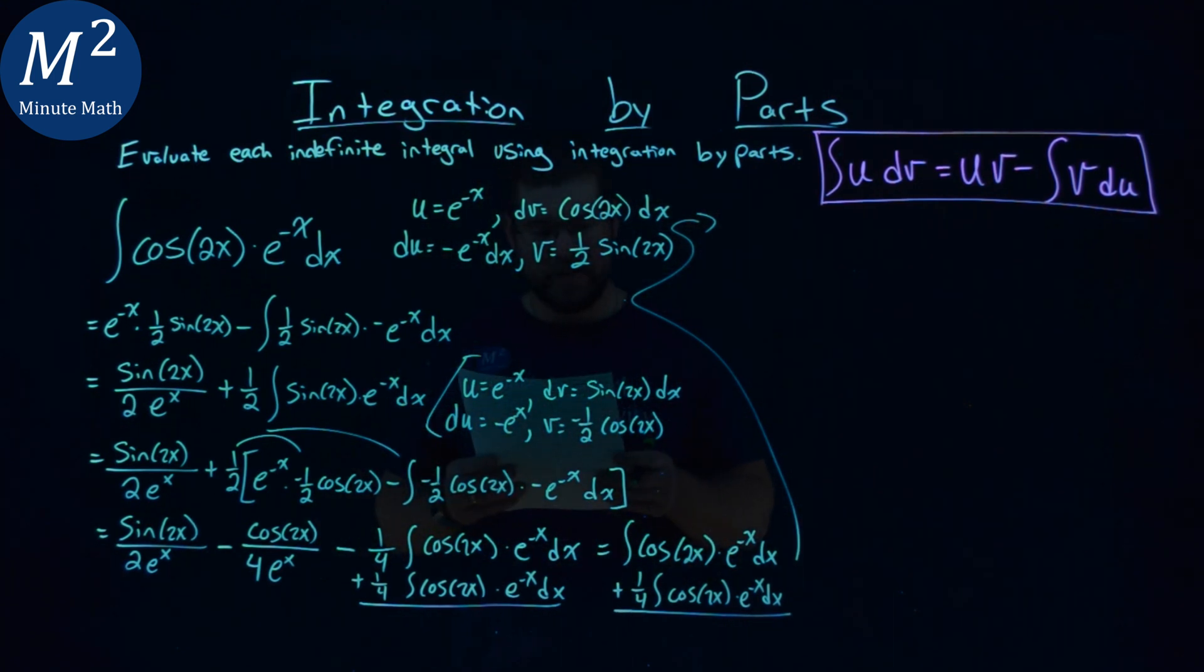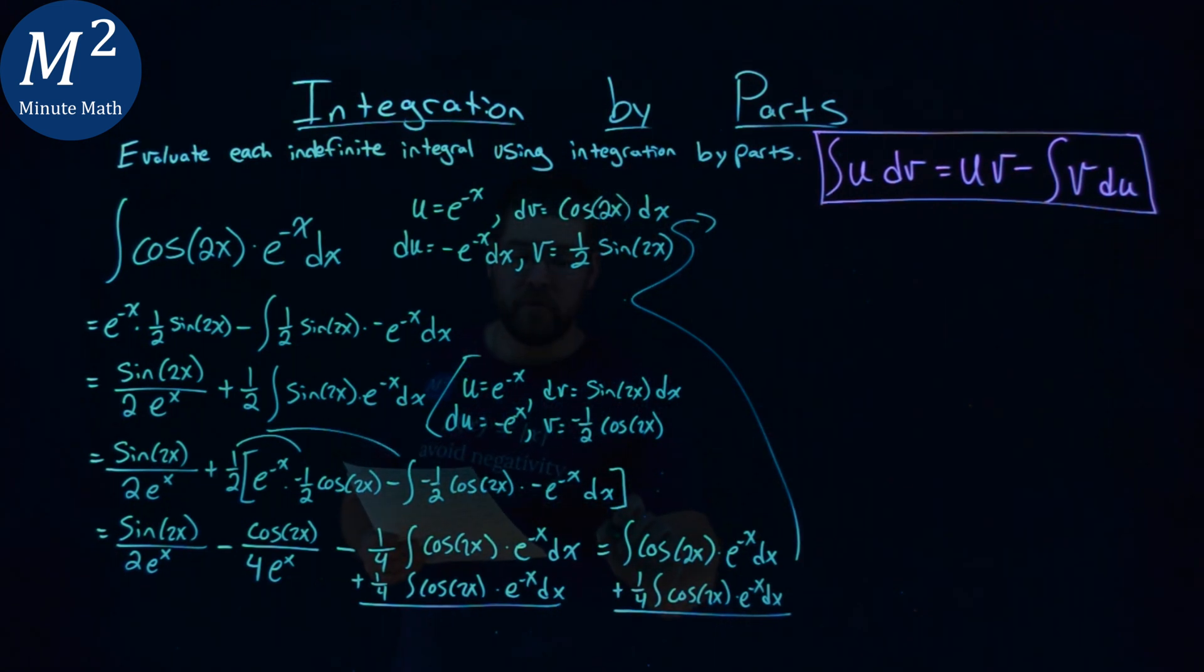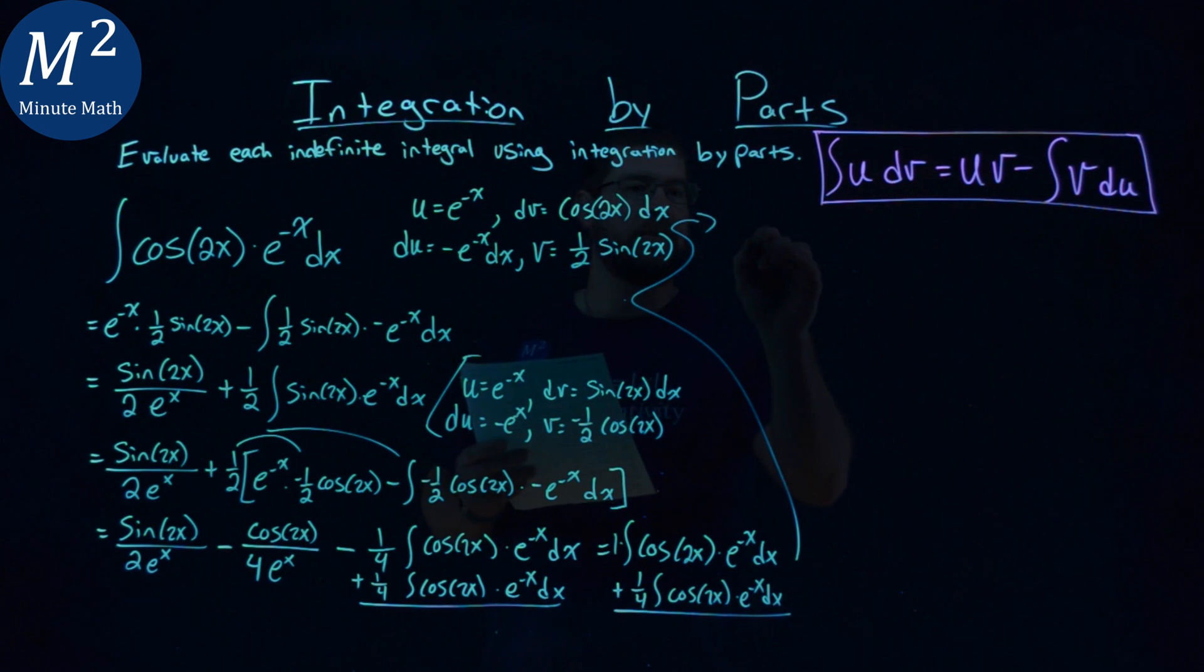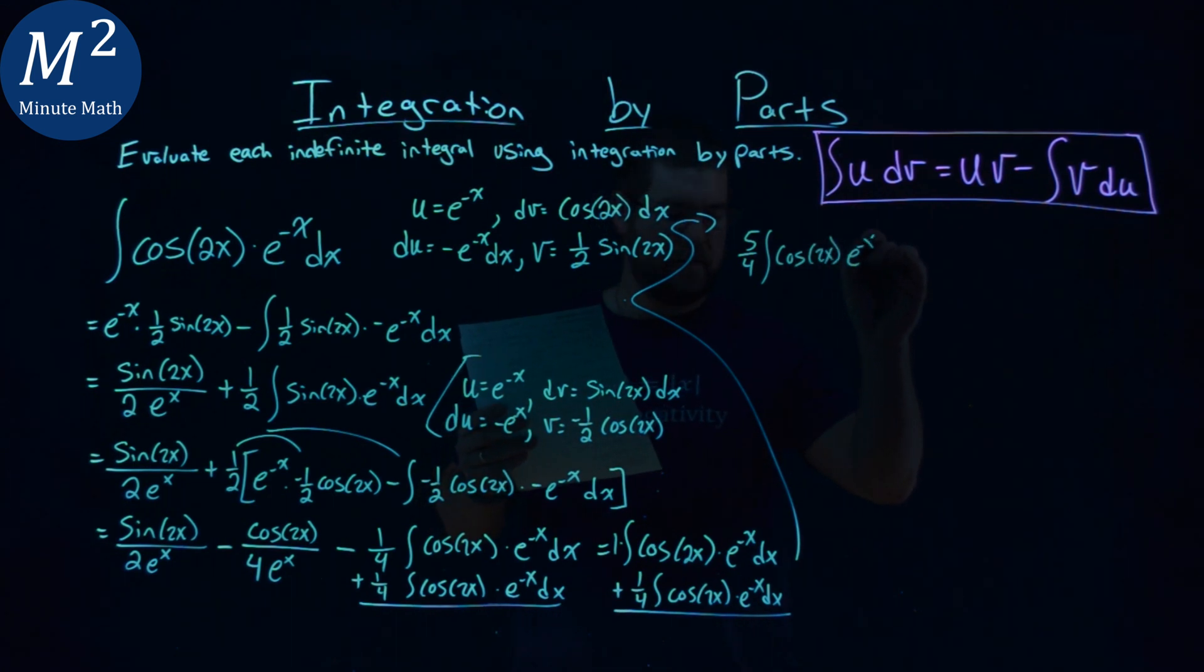So we have a coefficient of one, really, right? One's out front. One-fourth, that gives us five-fourths. So we have five-fourths times the integral of that cosine of 2x times e to the negative x dx.